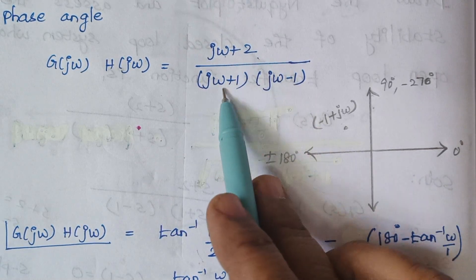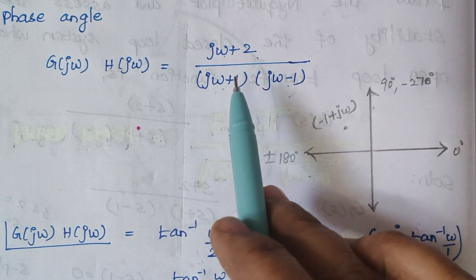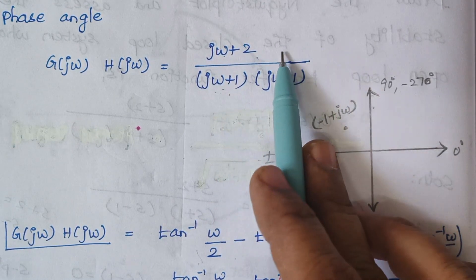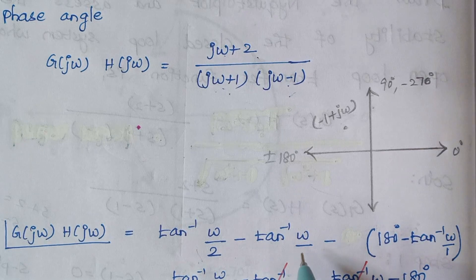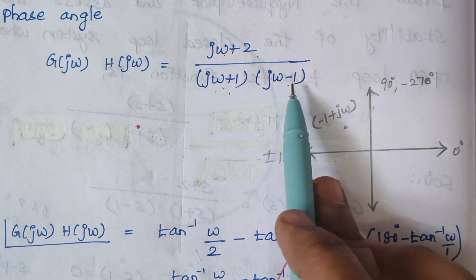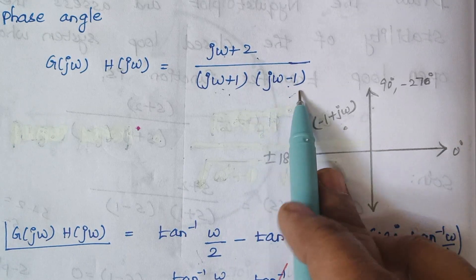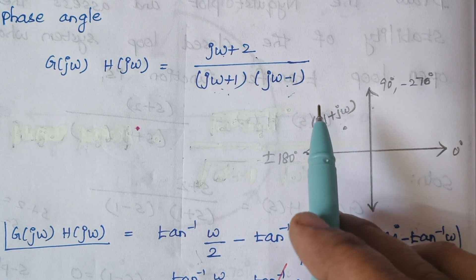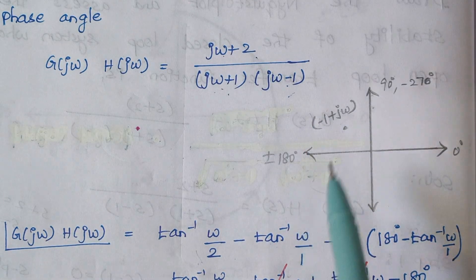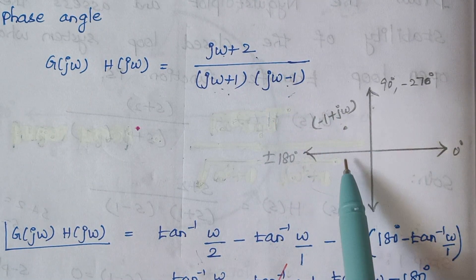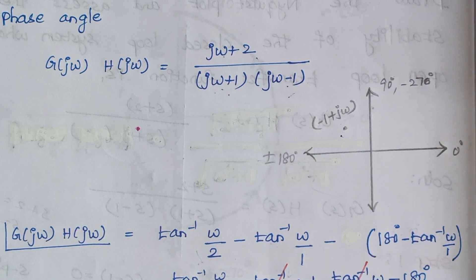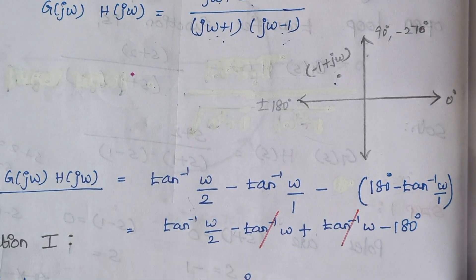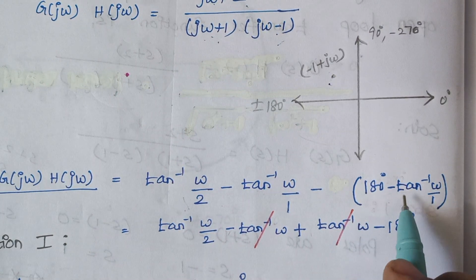When we look at this expression, we have two denominator terms. Whenever a denominator term is moved to the numerator, we add a minus sign. So minus tan inverse of ω divided by 1. The next term is jω minus 1, which can be written as minus 1 plus jω — both mean the same. Locating this point on the plot, minus 1 plus jω lies in the second quadrant. Whenever a pole is in the second quadrant, we write the phase angle as 180 minus tan inverse of ω.